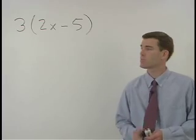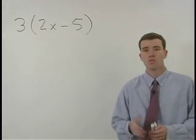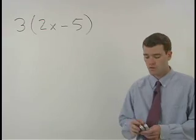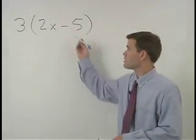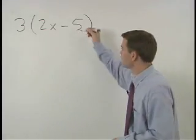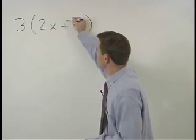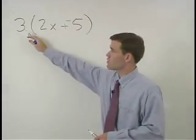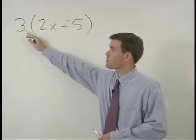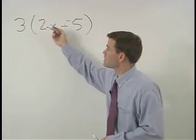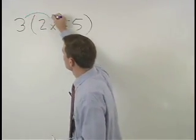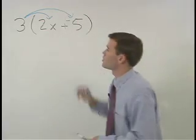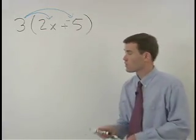So let's simplify this problem using the distributive property. The first thing we want to do is change this minus to plus a negative. Now we can distribute or multiply this 3 times each of the terms inside the set of parentheses.